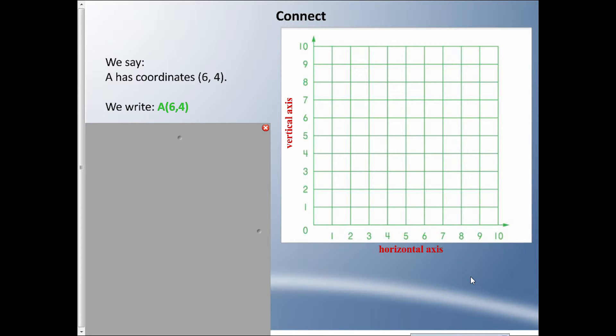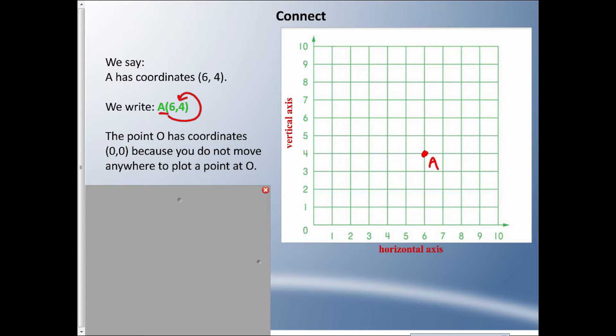We don't leave a space, so we know that A is talking about these coordinates here. The point O has coordinates (0,0) because you do not move anywhere to plot a point at origin. I don't move anywhere starting at the zero or the origin here, and I don't move anywhere up or down the other way, so we call it zero comma zero. Let's do another example.